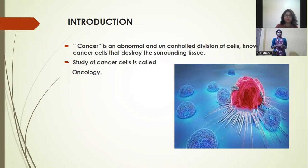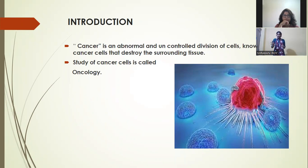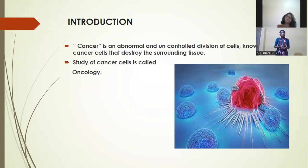When a normal cell is converted into a cancer cell, this type of cell rises up with uncontrolled division. Normal cells have a normal division — they spend their life cycle and are destroyed. But in the case of cancer cells, they undergo uncontrolled division. The study of cancer is called oncology.